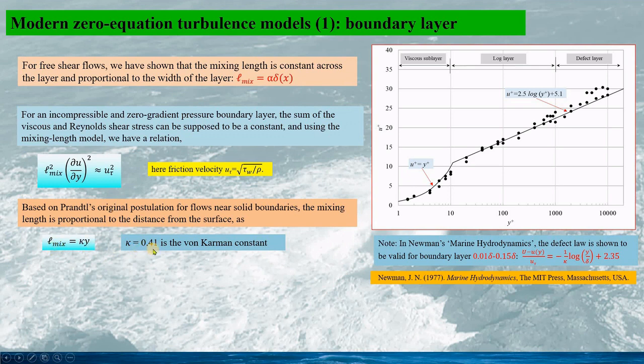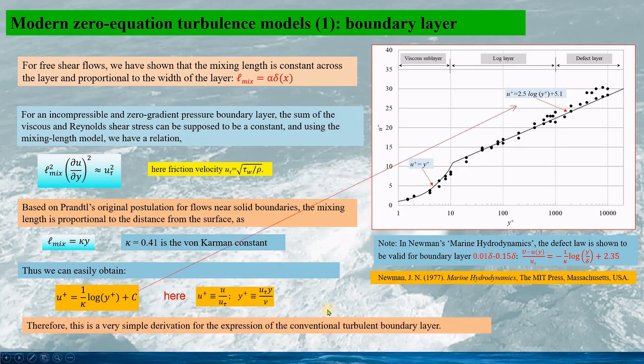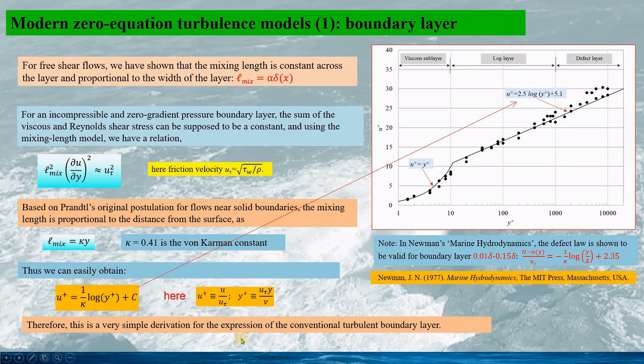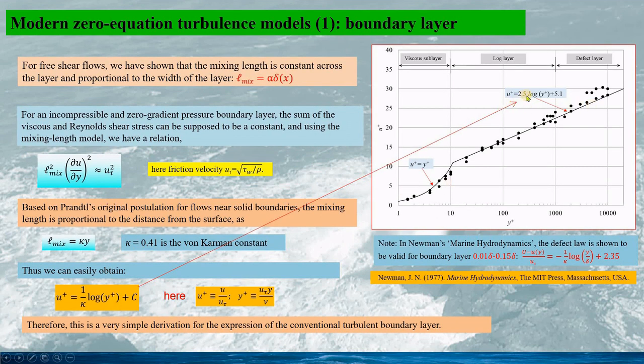Here kappa equals 0.41 is the von Karman constant, but sometimes kappa is also given by 0.4. So based on the above equations, we can easily obtain the expression as this, u^+ and y^+ the relation. So this is the expression for the log layer. And the non-dimensional u^+ is defined as this, and the non-dimensional y^+ is defined as this. Therefore this is a very simple derivation for the expression of the conventional turbulent boundary layer, since this is the same as this if c equals to 5.1.